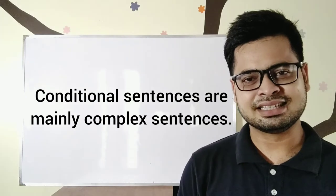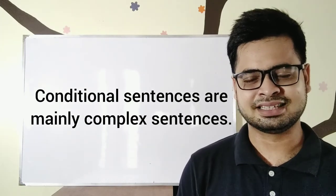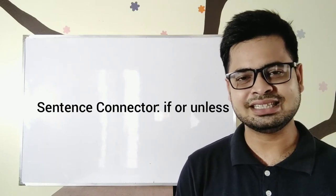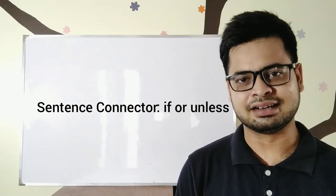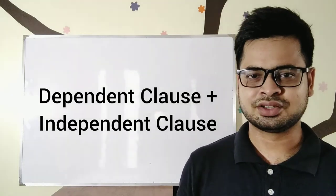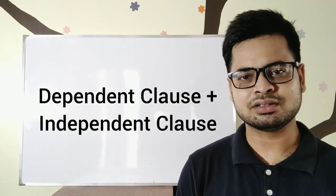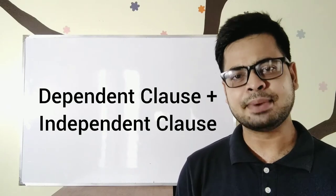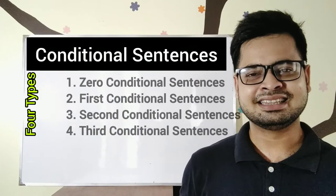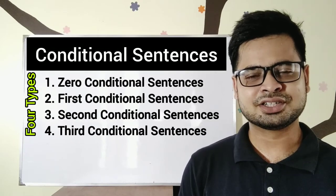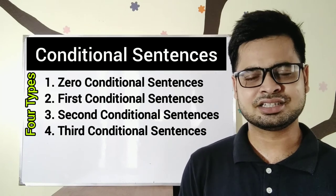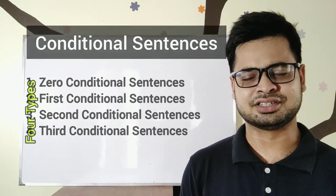Conditional sentences are mainly complex sentences. In a conditional sentence, you will find a sentence connector, which is 'if' or 'unless', and you will get two clauses — one is an independent clause, another one is a dependent clause. There are four types of conditional sentences: zero conditional, first conditional, second conditional, and third conditional.